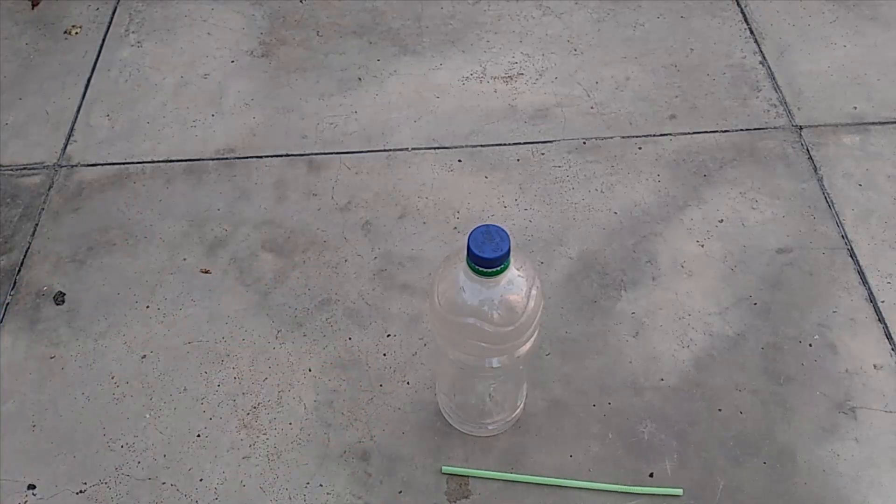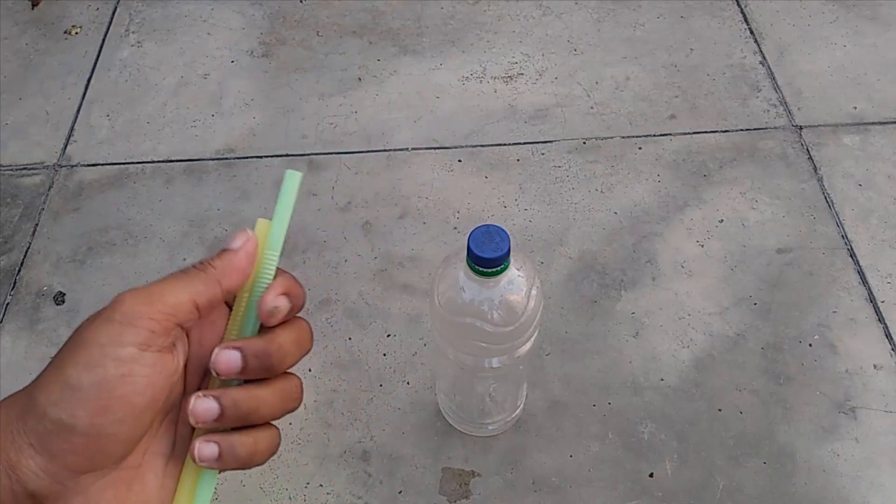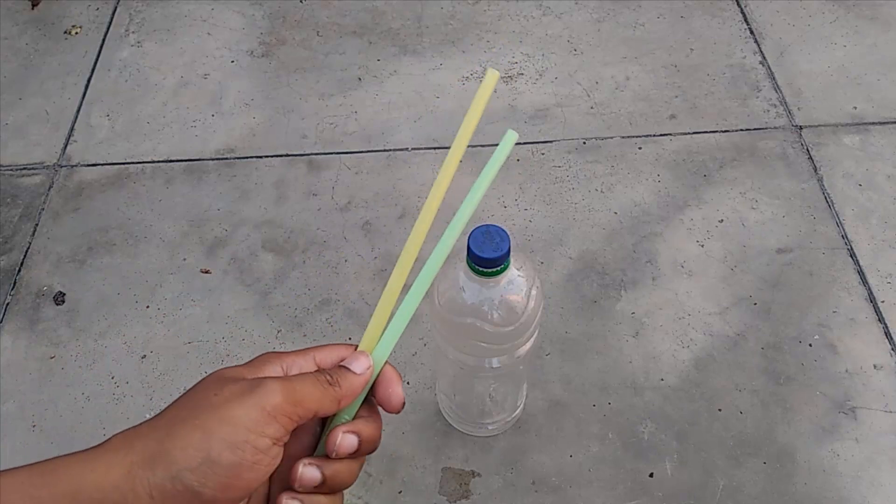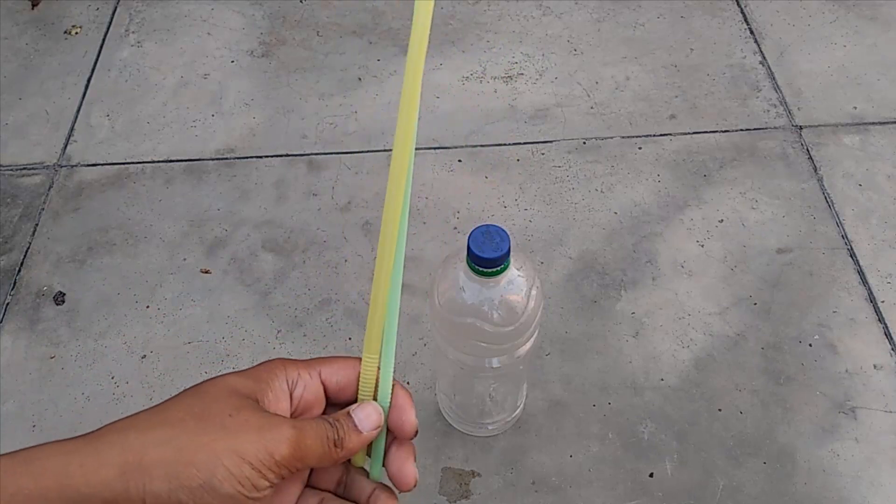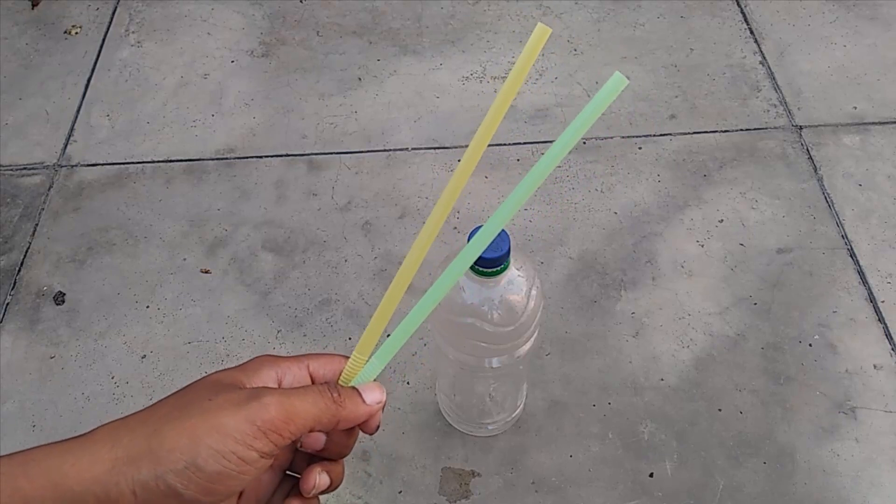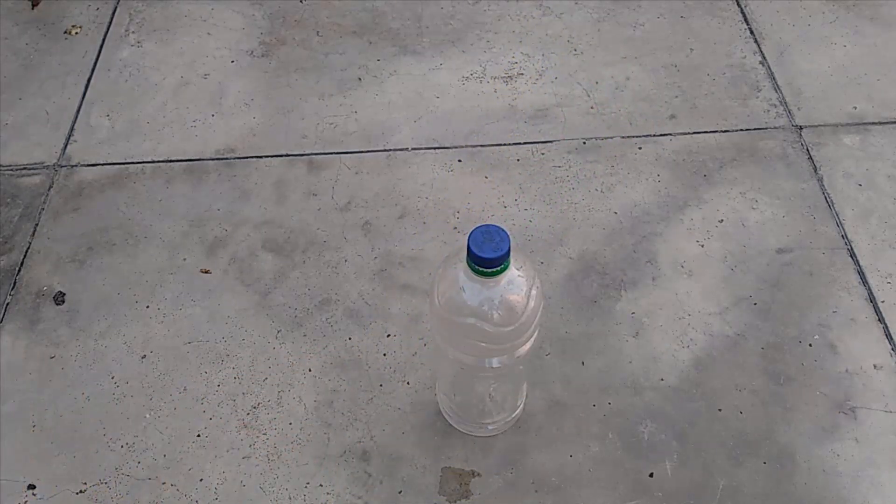With the help of this simple setup of two straws and a woolen cloth, you can make a student see that when we bring same charges together they repel, and when we bring opposite charges together they attract. Meet you in the next experiment. Thank you.